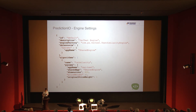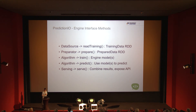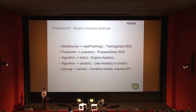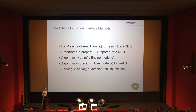Here's a quick rundown of the interfaces Prediction.io requires you to implement. A data source object with a read-training method returning an RDD. A preparator for enriching data. The algorithm needs two interfaces: train, which takes prepared data and works on it, and predict, which takes the trained model and serves results. The serving part calls the algorithm's predict method, potentially getting data from multiple algorithms and deciding how to merge or combine those results.